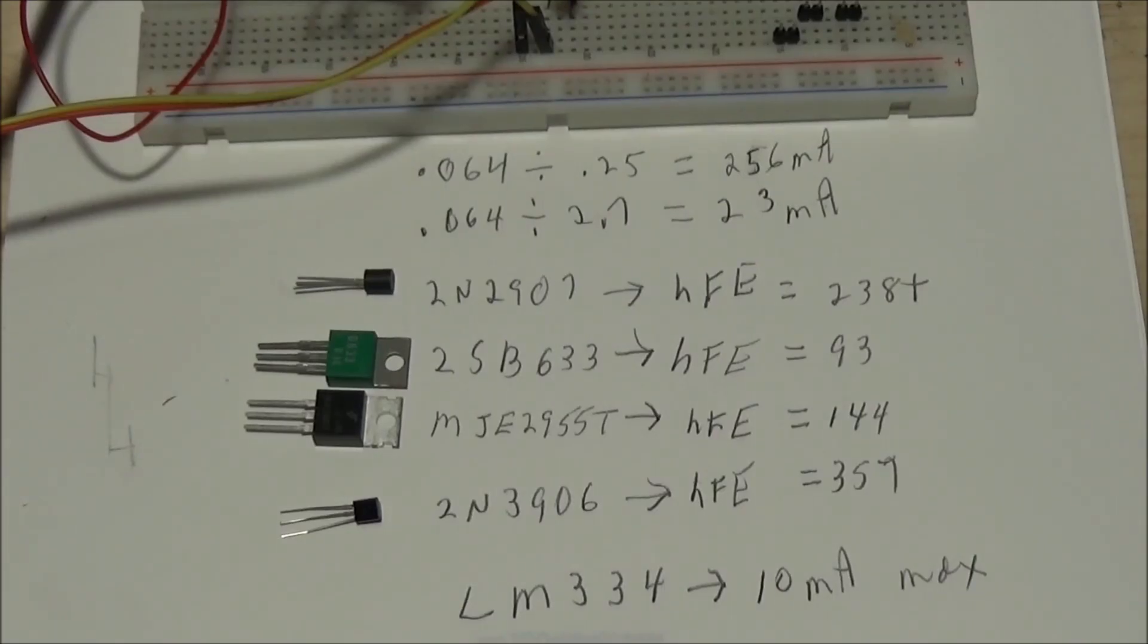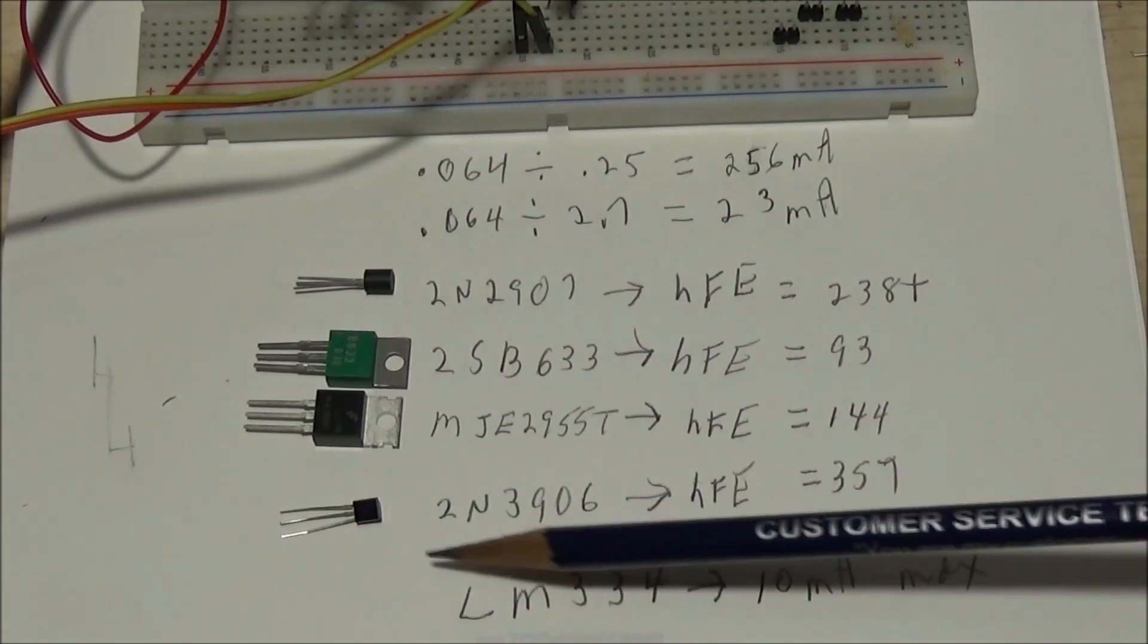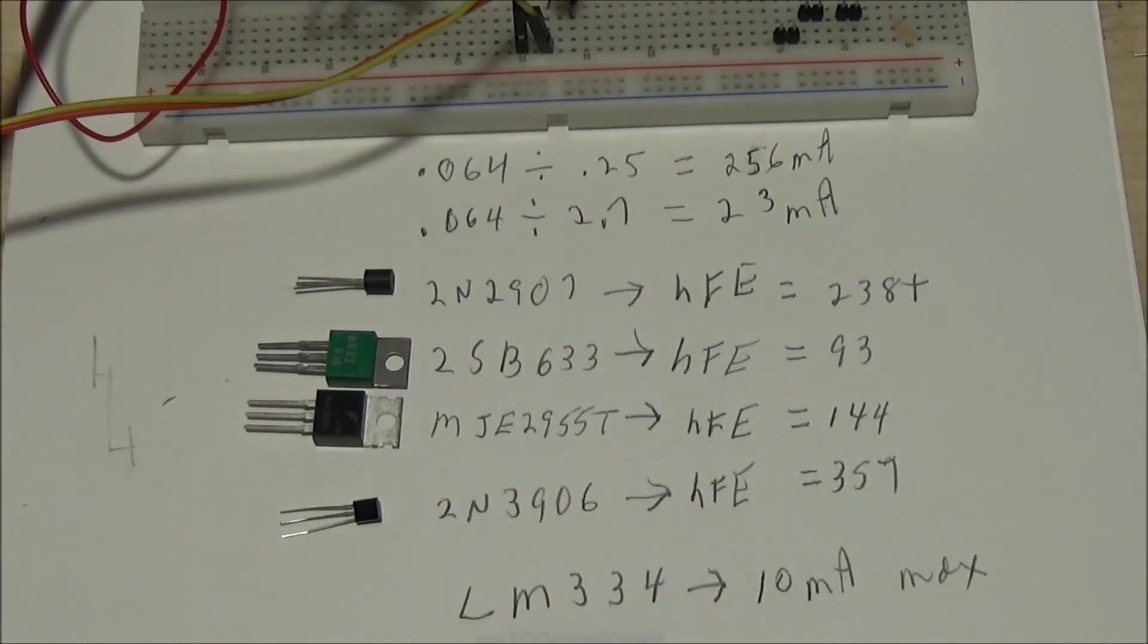Let's look at these various transistors. The LM334 itself can only produce a maximum of 10 milliamps, so you're going to be using it with a PNP transistor. If you're going to use small signal transistors such as the 2907 and the 3906, you have to be aware of something.